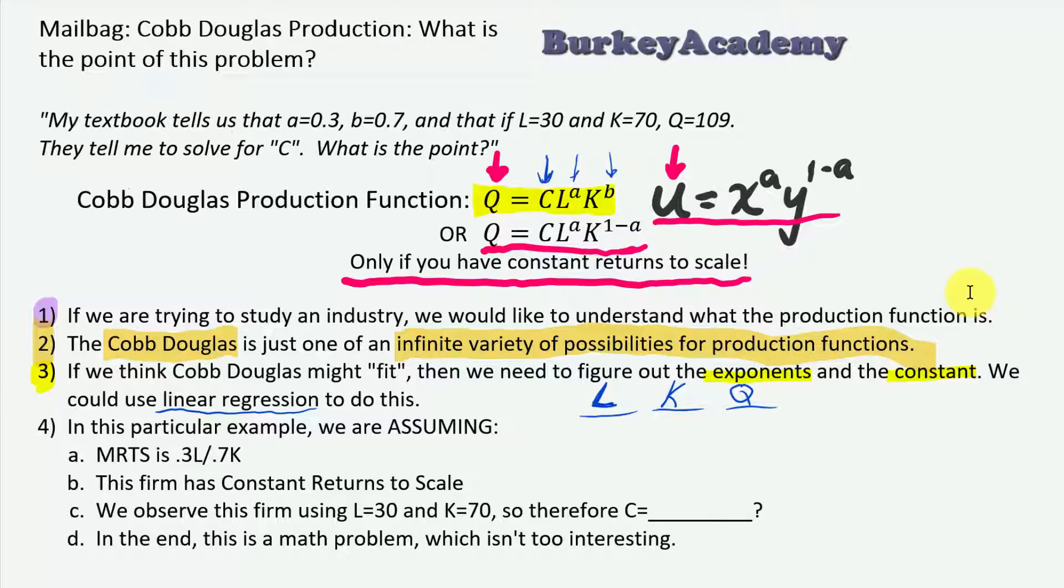In particular, in this example though, what we're assuming is that number one, the marginal rate of technical substitution is 0.3L over 0.7K, just using that shortcut rule. Again, I'll link to the video in the description about that. So for an industry, we might know this is true - that the ability to substitute between labor and capital is given by this ratio, 0.3L over 0.7K.